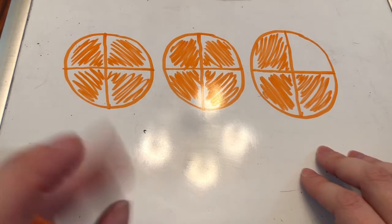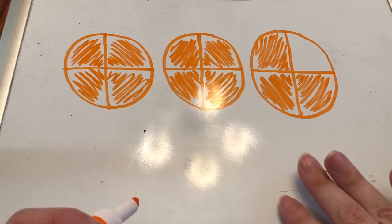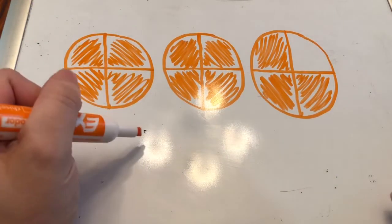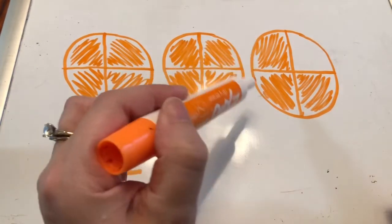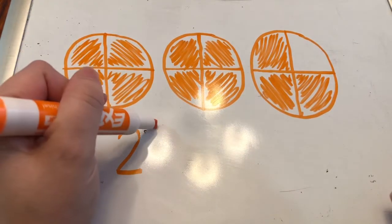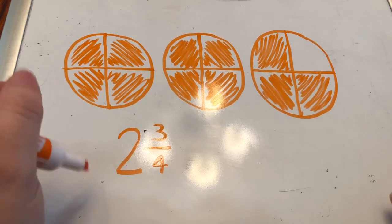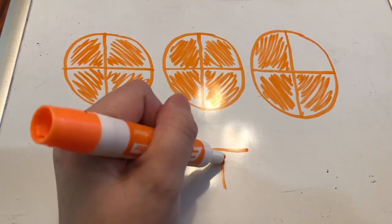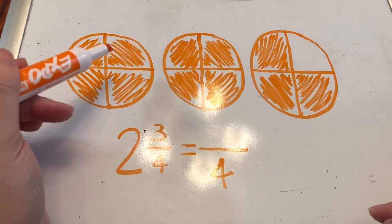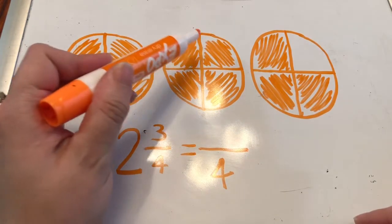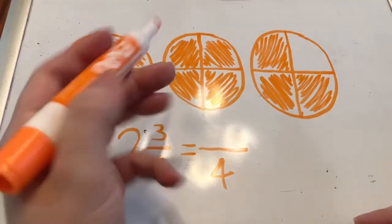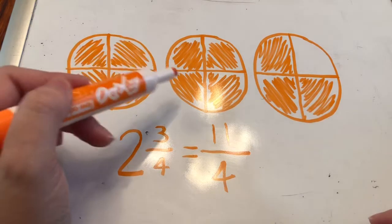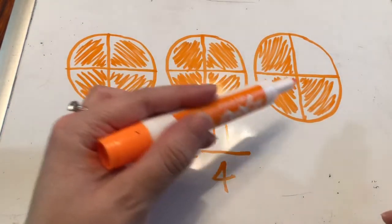This time we're using fourths. Let's say it gives us a mixed number to start and we have to convert it into an improper fraction. I can see that I have one whole, two wholes. I'll write that: two wholes and one fourth, two fourths, three fourths. So I have two and three fourths and I need to convert it into an improper fraction. Our denominator will still be fourths because that's the fraction family we're using. I count the number of fourths that are present: one, two, three, four, five, six, seven, eight, nine, ten, eleven. Eleven fourths — that means the number of fourths that are colored in.